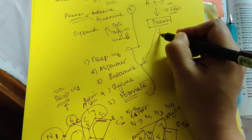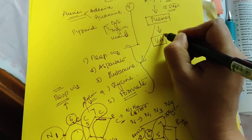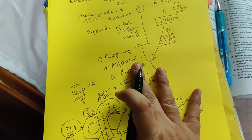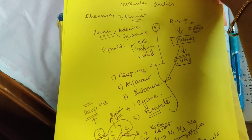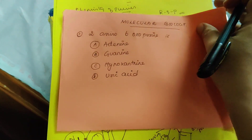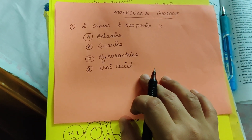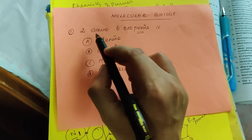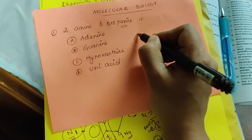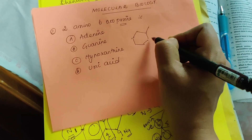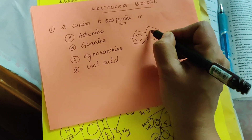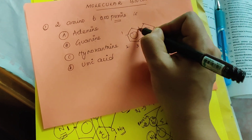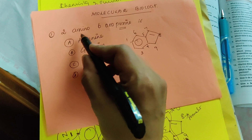Purines get broken down to form uric acid. The chemistry of purines is now complete. Returning to the question: 2-amino 6-oxopurine — purines are adenine and guanine. Let us place the structure of purine with numbering 1, 2, 3, 9, 4, 5, 6, 7, 8, and identify the 2-amino and 6-oxo groups.